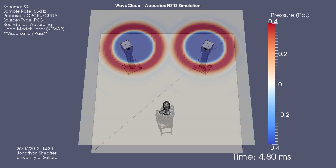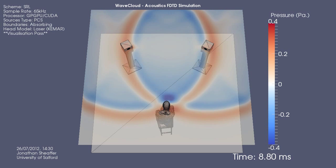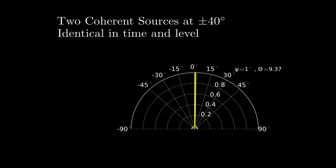For example, if two sources radiate the same signal with no level or time delay, then the model responds that the auditory event is perceived to be exactly between the two sources. Of course, this is expected in a summing localization setting.